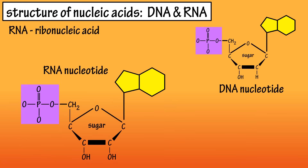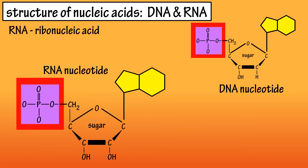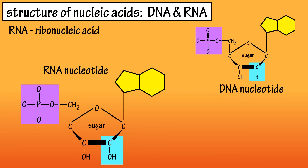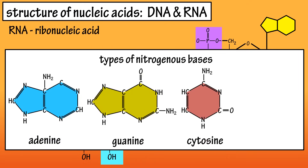Now for RNA. The nucleotides that make up RNA are very similar to those that make up DNA. RNA nucleotides have a phosphate group with the same structure as in DNA. They have a five-carbon sugar, but the number 2 carbon is bonded to a hydroxyl OH group instead of a lone hydrogen atom, and this sugar is called ribose. It also consists of the three same nitrogenous bases as DNA: cytosine, adenine, and guanine.